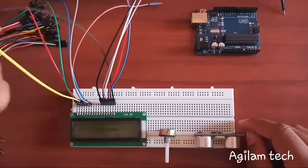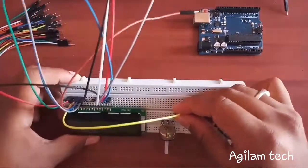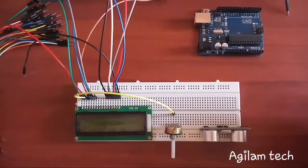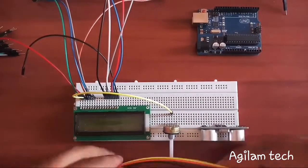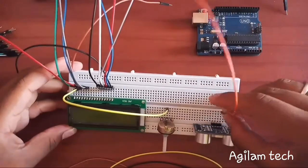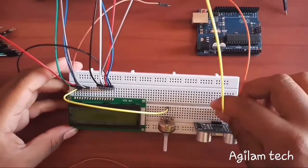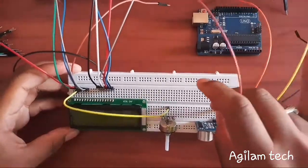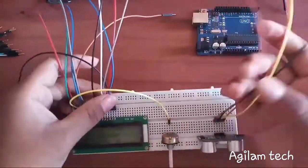Now I am connecting pin number three from LCD to center of the variable resistance. I am connecting pin number fifteen. I am connecting ground and echo. Now I am connecting trigger and now I am connecting plus VCC.